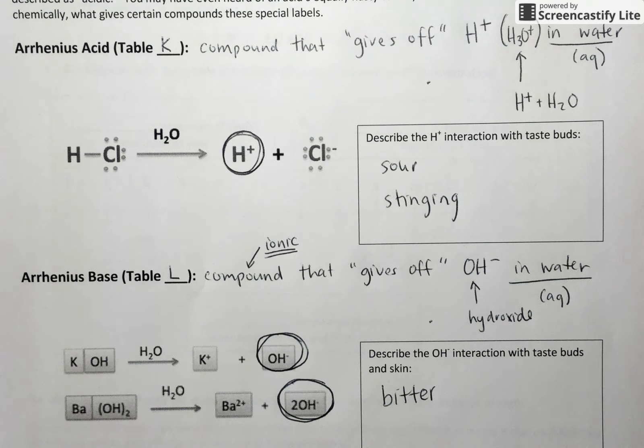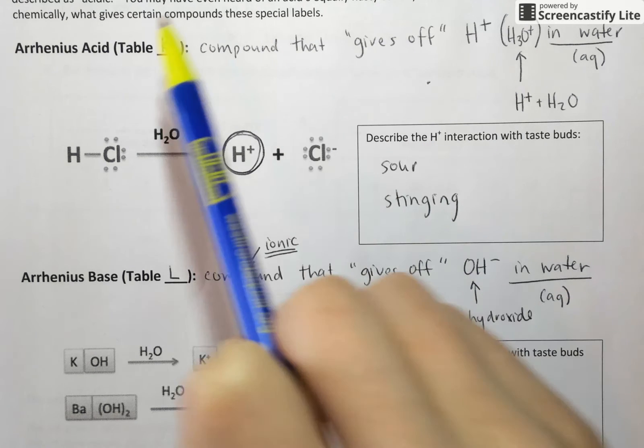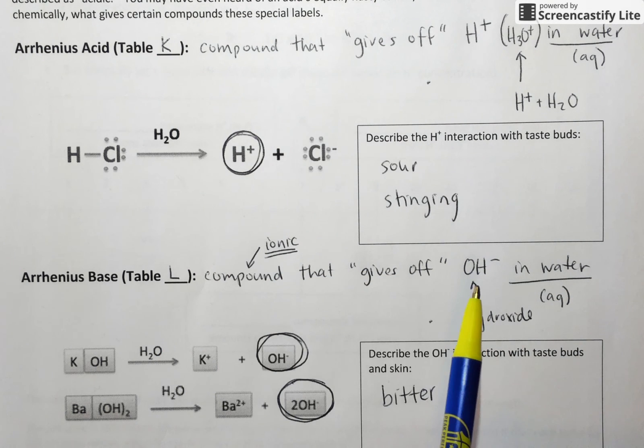What I really want you to walk away from here is the fact that by Arrhenius' definition, anything that gives off H plus in water is an acid, and anything that gives off OH minus in water is a base.